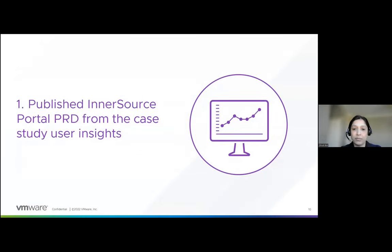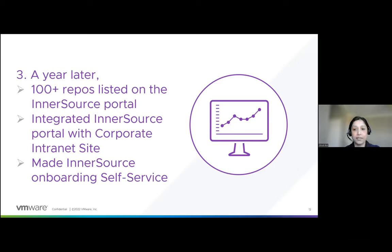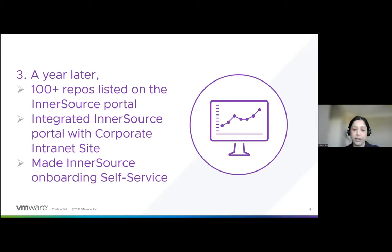We were able to brainstorm user insights gathered into user scenarios, personas, and user stories. We produced the InnerSource Portal project requirements document based on these findings. Over a six-month period, the InnerSource Program Office released a minimum viable product in the form of the InnerSource Portal to test the user insights gathered from the study. A year later, after multiple iterations and user feedback, we have 100-plus repos across the company listed on the InnerSource Portal to encourage cross-team collaboration. To make searching for information as easy as possible, we integrated the InnerSource Portal with the company's internal websites. And to be inclusive and keep scaling project submission, we launched self-service onboarding, allowing users to self-onboard their projects within a few minutes via the InnerSource Portal.